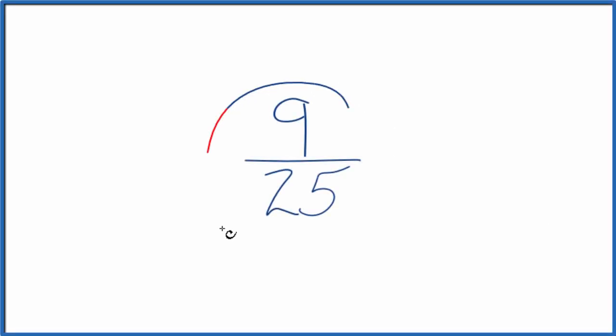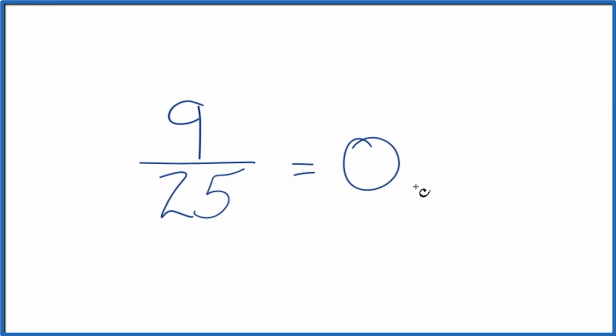Let's write the fraction 9/25 as a decimal. There are two ways you could do this. One way is to take 9 and divide it by 25 on your calculator. You get 0.36. So the fraction 9/25 equals the decimal 0.36.